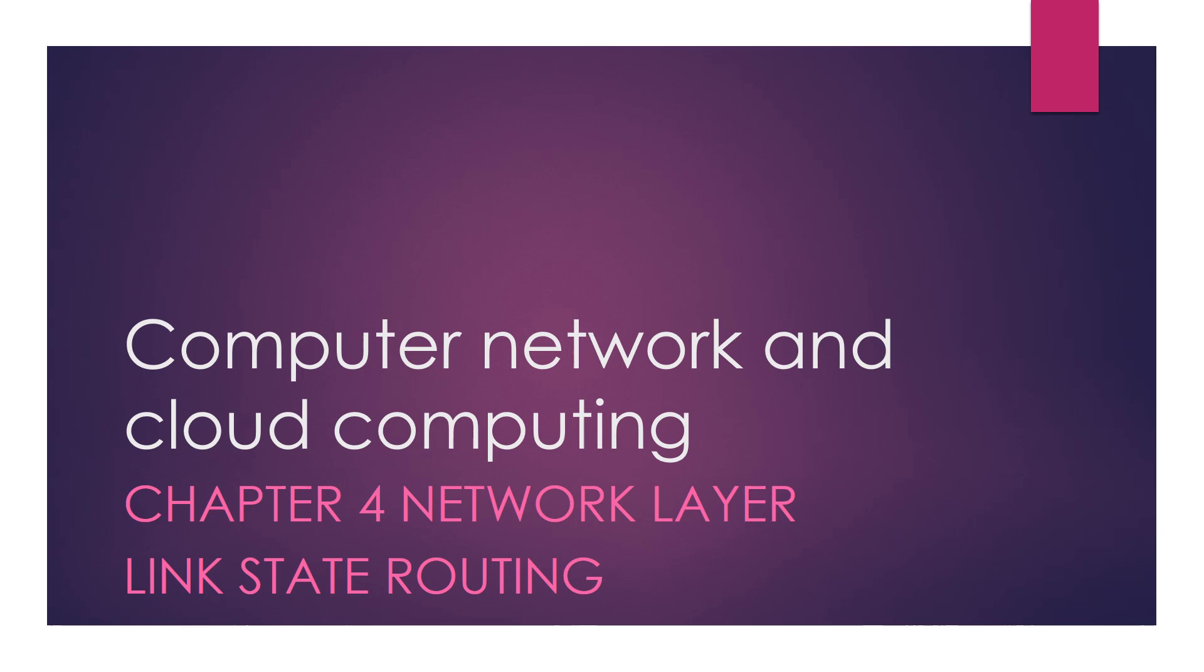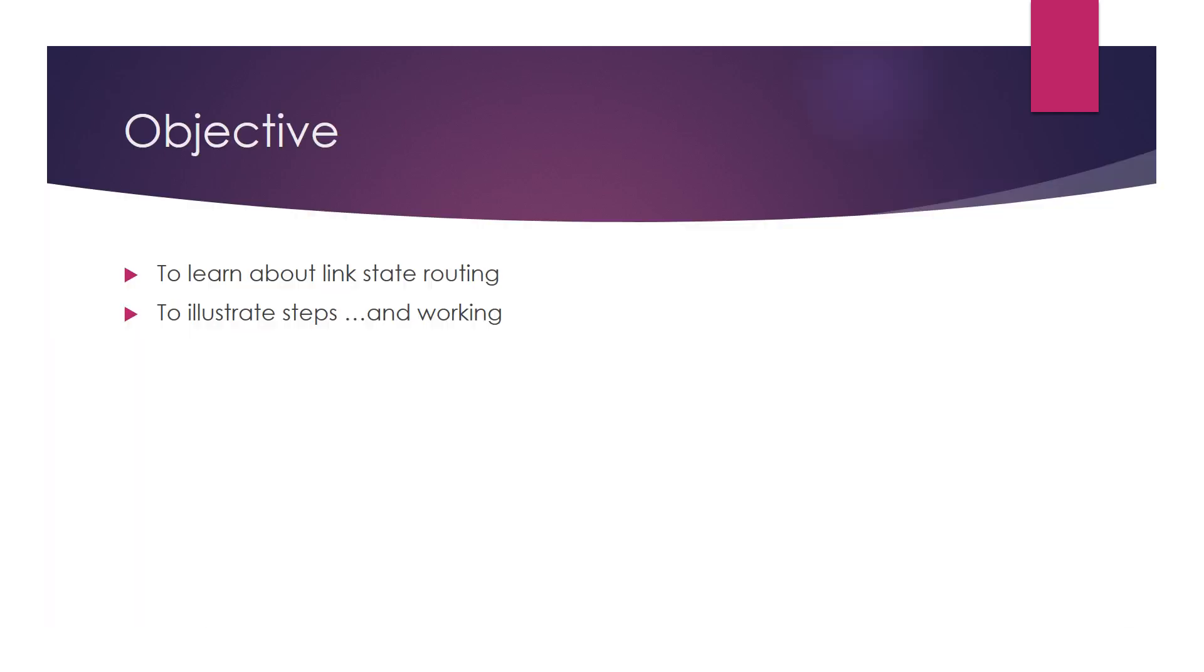Now we will discuss link state routing, which is part of our network layer discussion. We covered three main fundamental working principles behind routing algorithms: first is shortest path algorithm, second is distance vector routing, and third is link state routing. Today we will see link state routing.